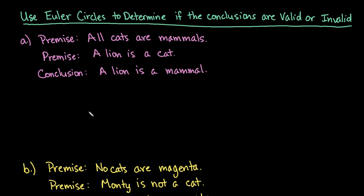Hi, for this video what I want to do is show you how to use Euler Circles to help determine if conclusions are valid or invalid. When you're looking for whether the conclusion is valid, you have some statements that you are given and we're going to use circles to help represent that.